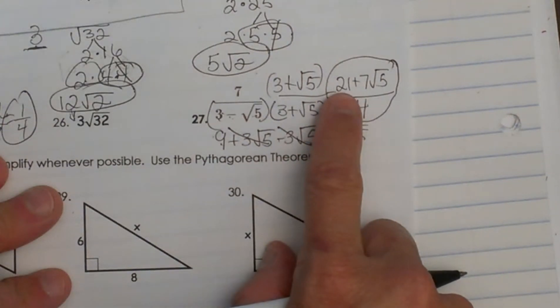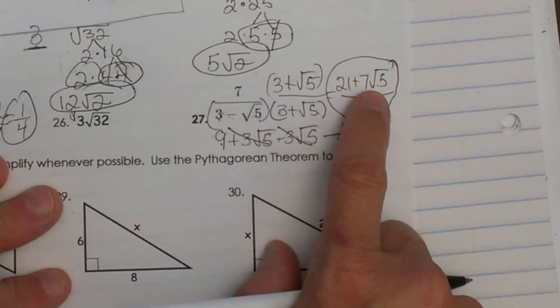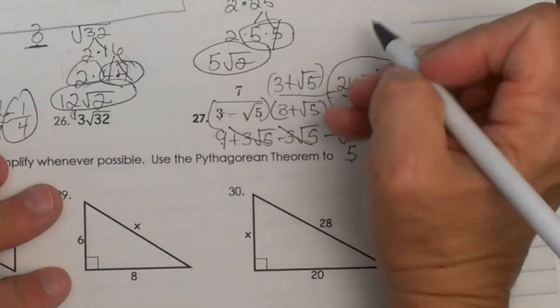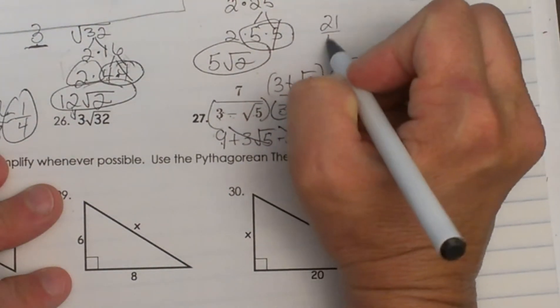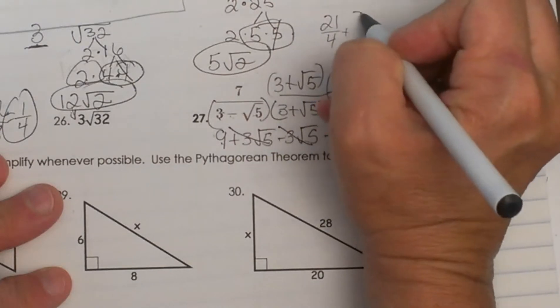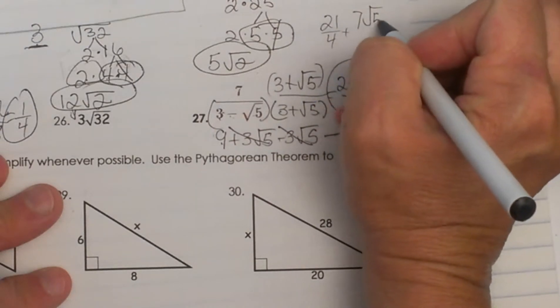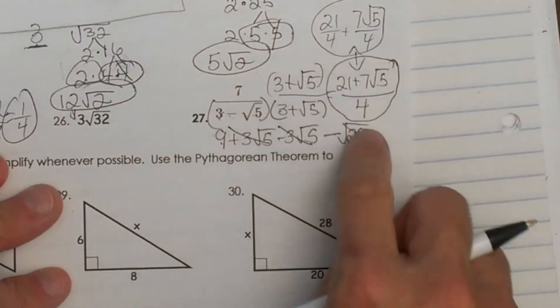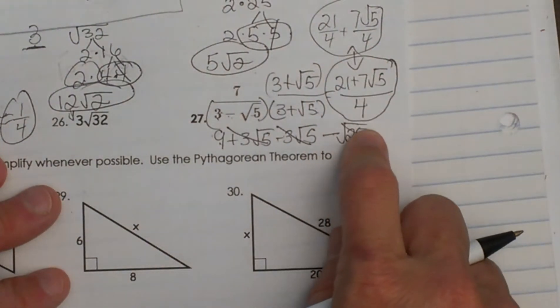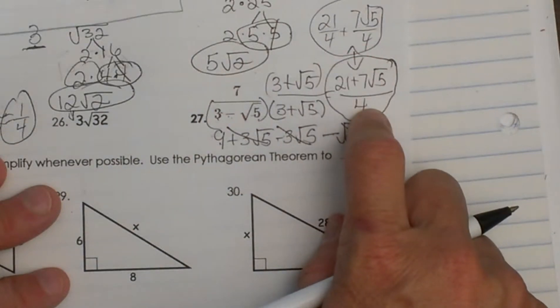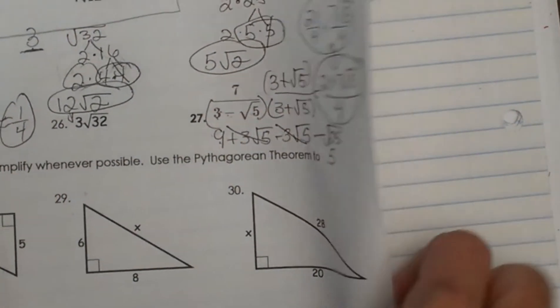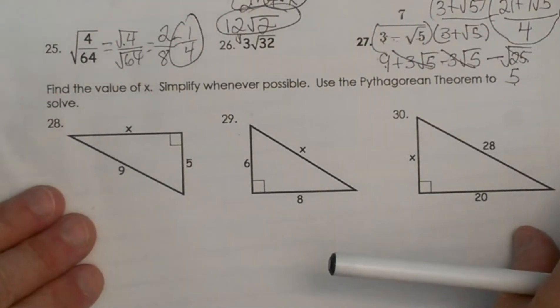So the final answer is 21 plus 7 square root of 5 all over 4. Some teachers like to split it and write it as 21/4 plus 7 square root 5 over 4. You can write it like that too. Both answers are perfectly acceptable, and you need to be aware of that so you recognize the answer in both forms. Let's look at number 28.